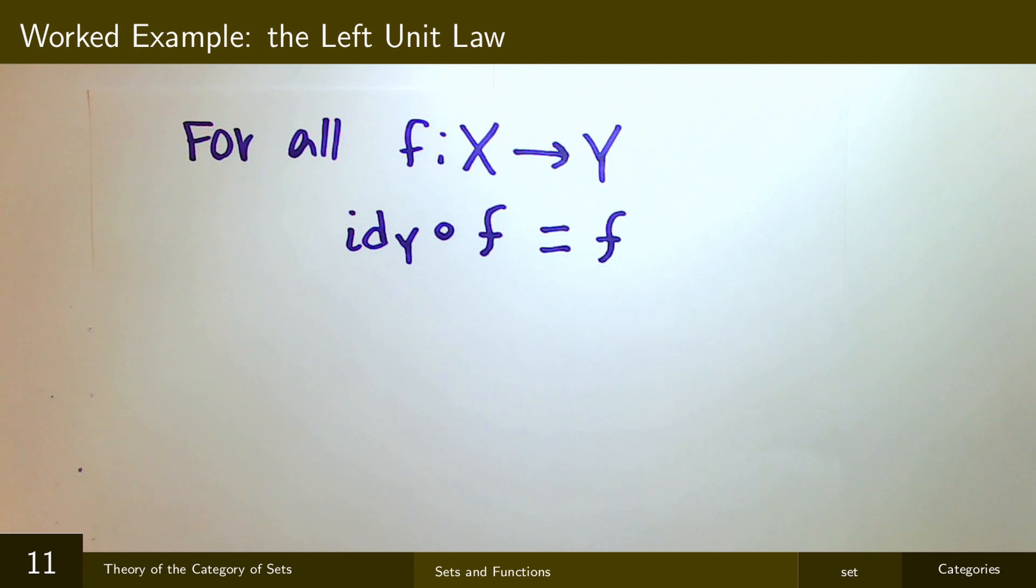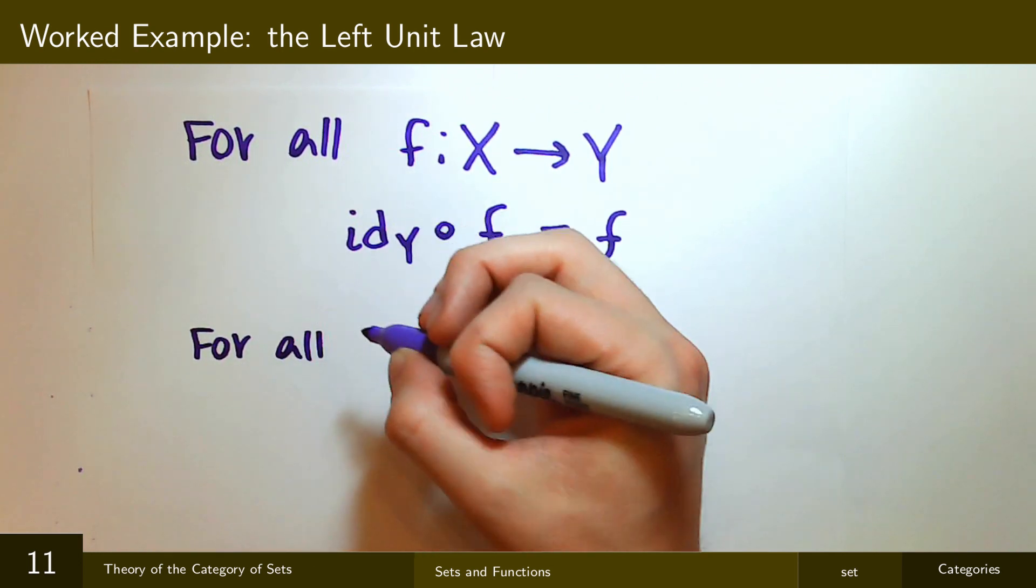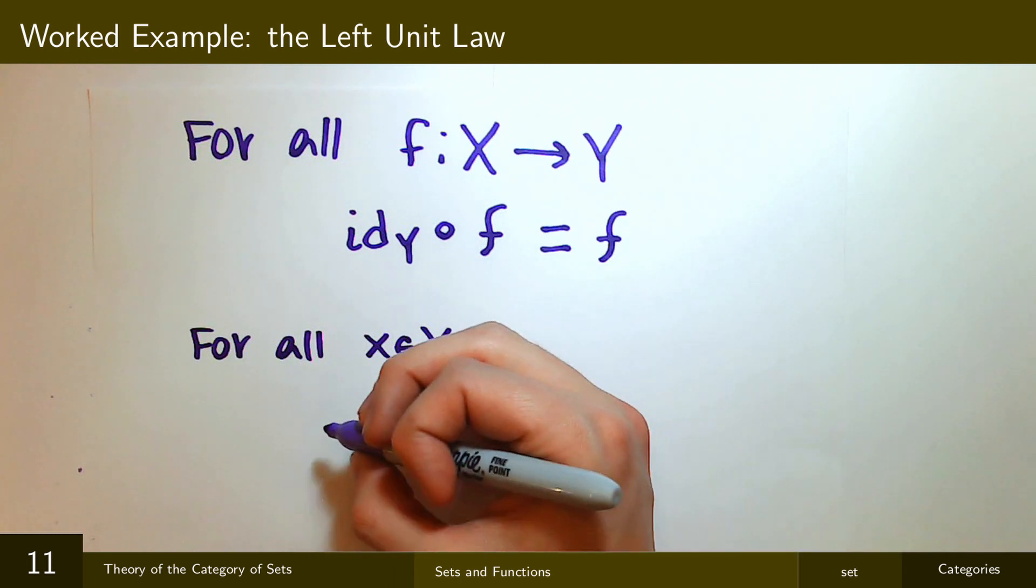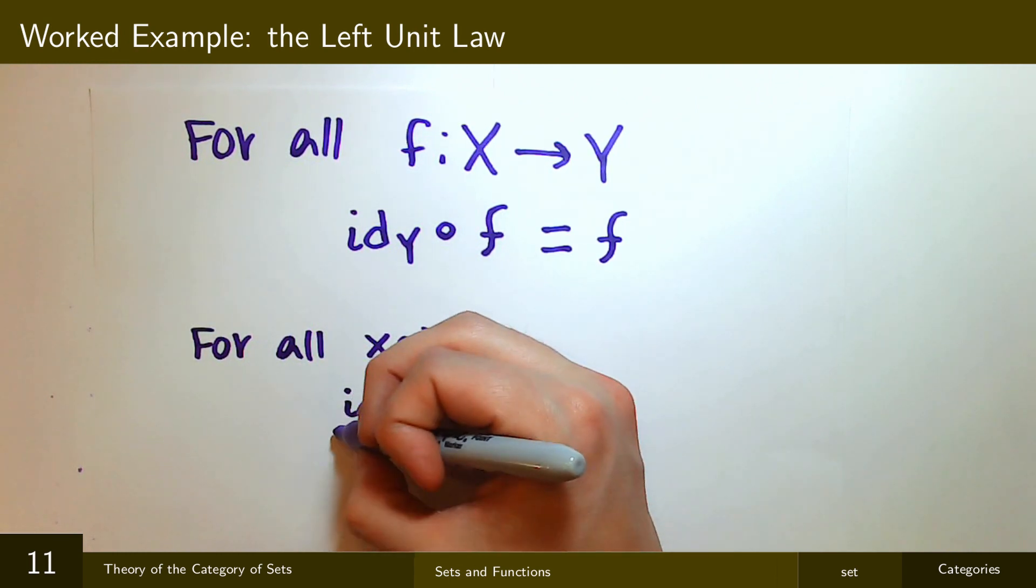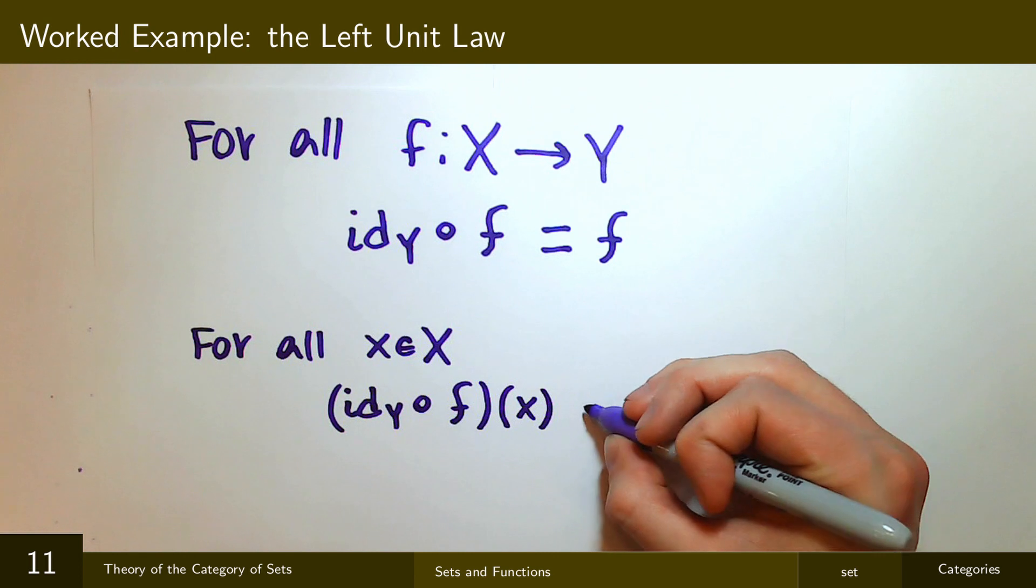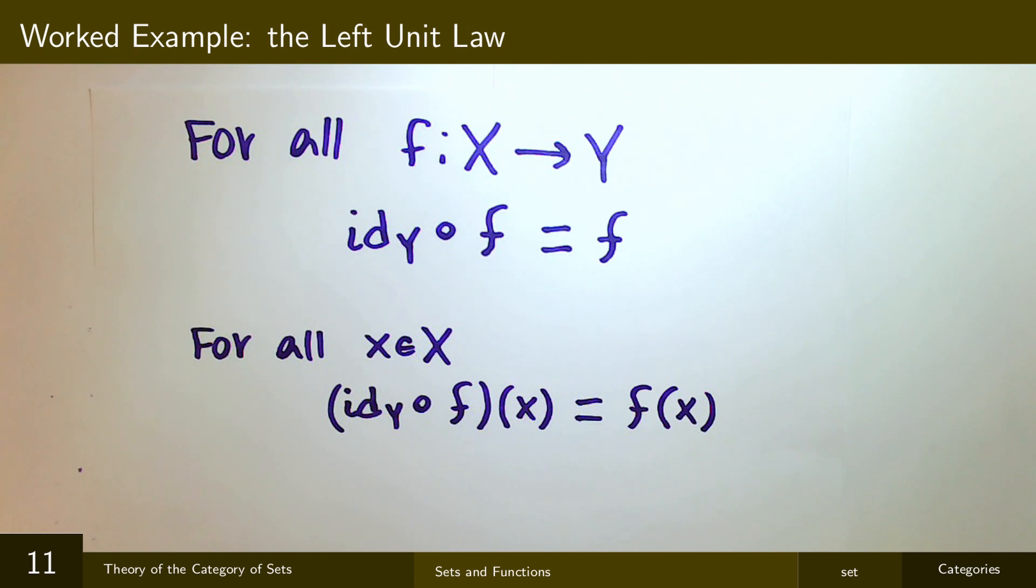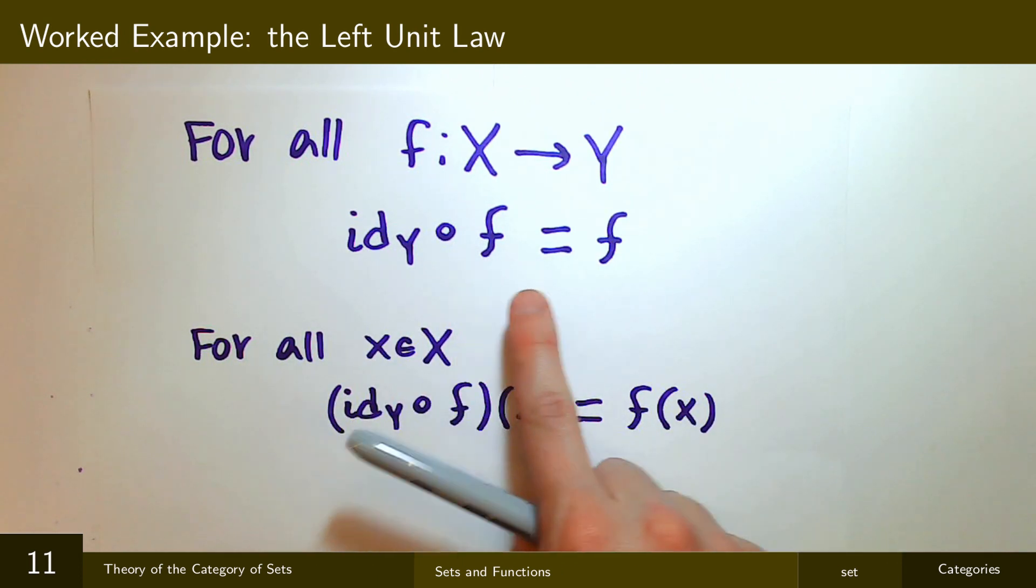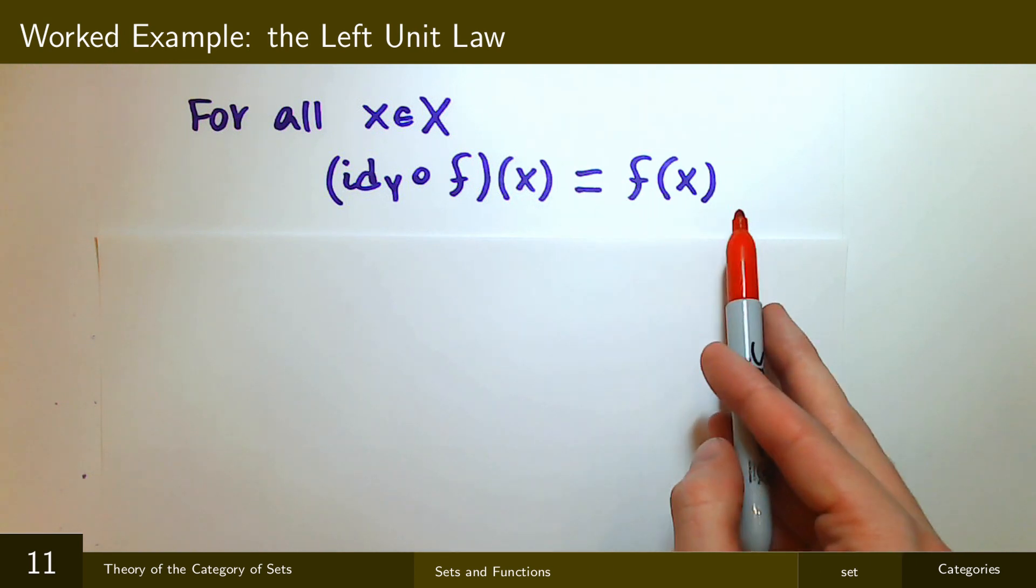So like I said, we'll use the principle of function extensionality. So we need to prove that for all x in X, the identity on Y composed with f applied to x is f(x). So remember the principle of function extensionality says that if I have two functions, if I have two functions and which are the same on all elements of their domain, then those are the same function. And so to prove this, I just need to calculate the left-hand side and calculate the right-hand side and show that they're the same.